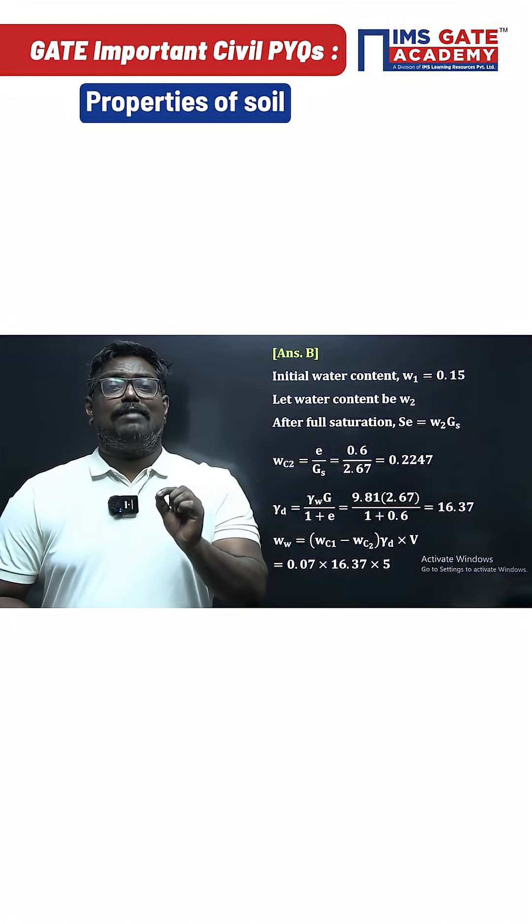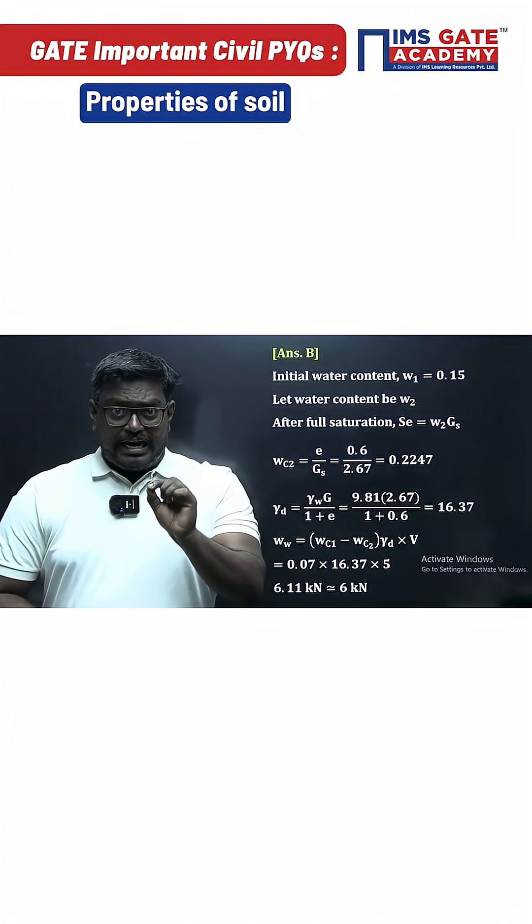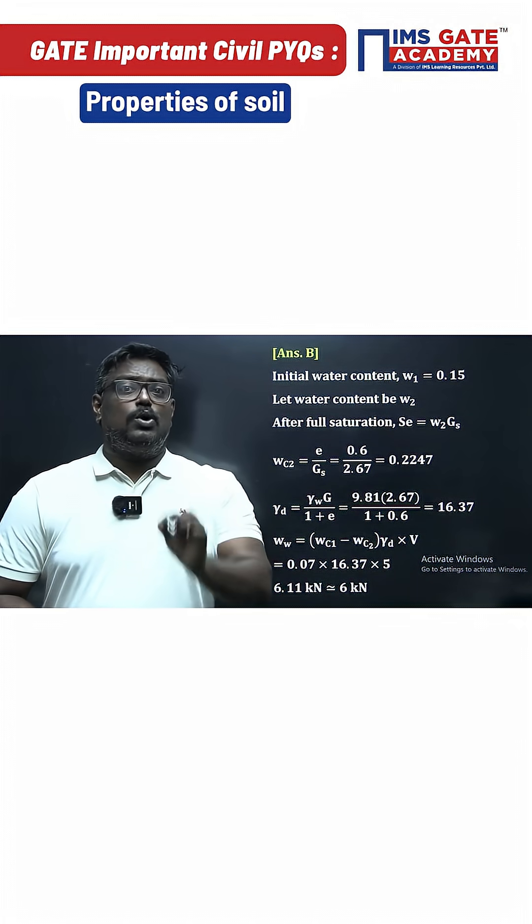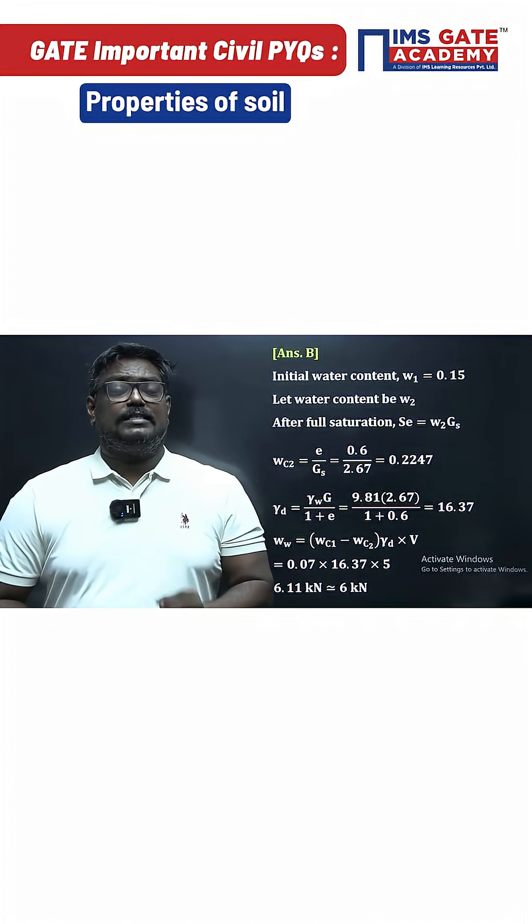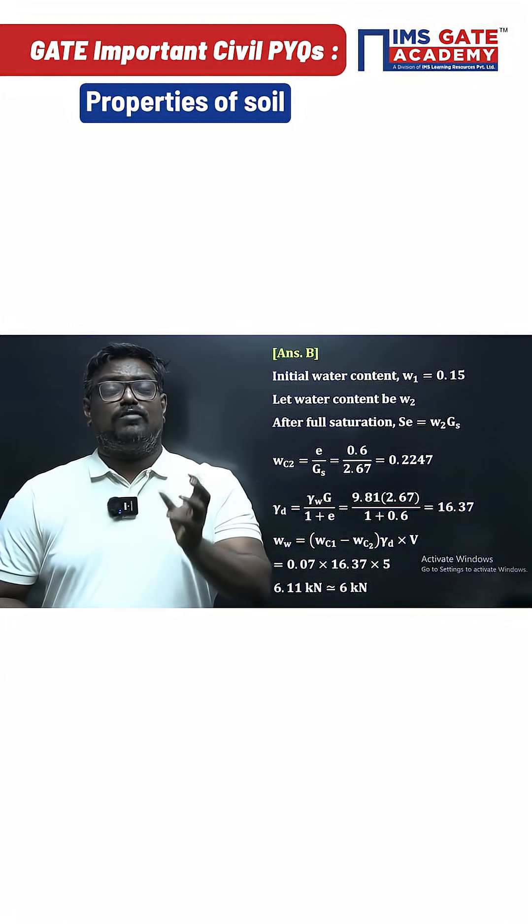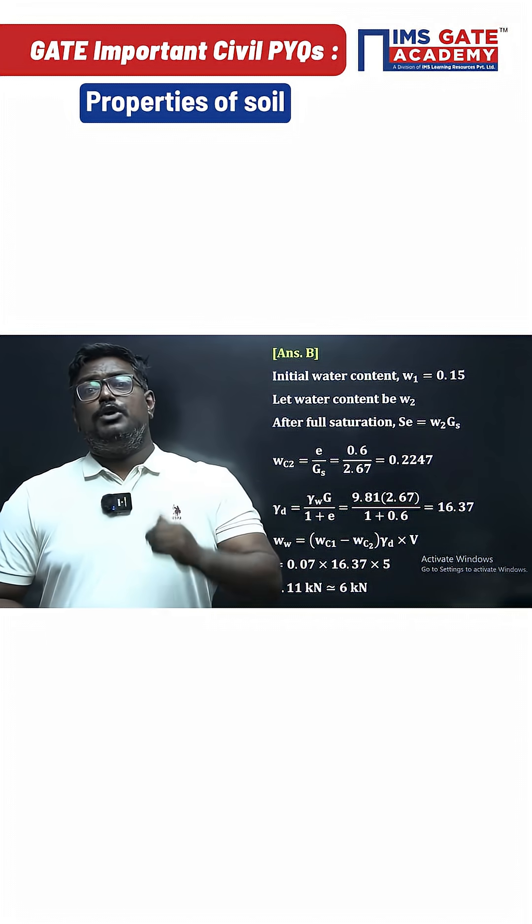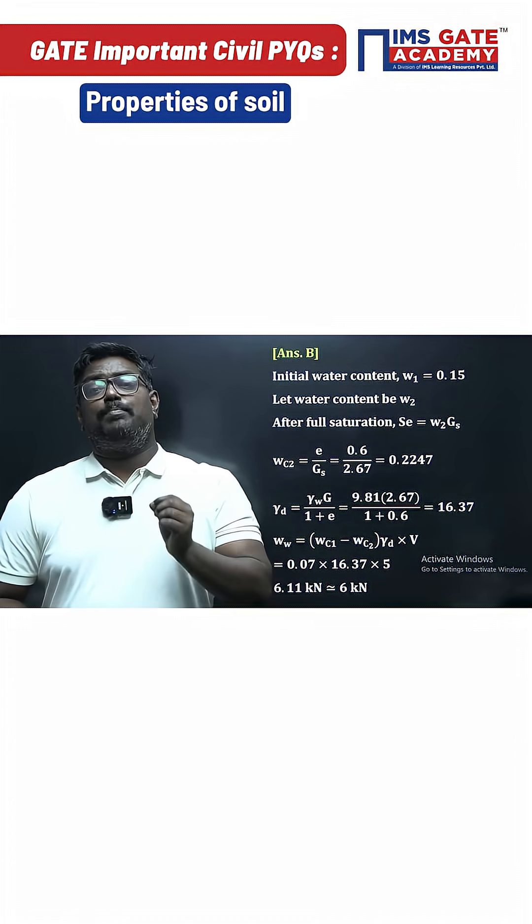And you know how to calculate the value of dry density. For calculating dry density, gamma D is equal to gamma W times G upon 1 plus E. Substitute the values of specific gravity and void ratio, you will get a value of dry density as 16.37.